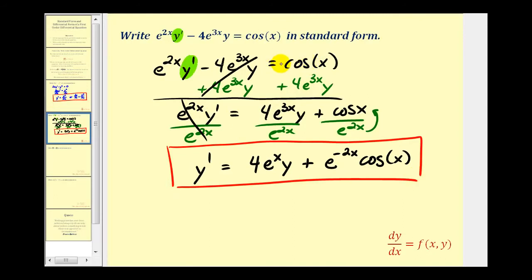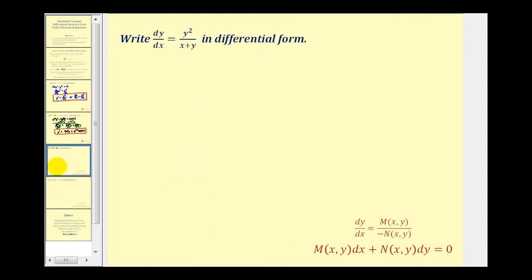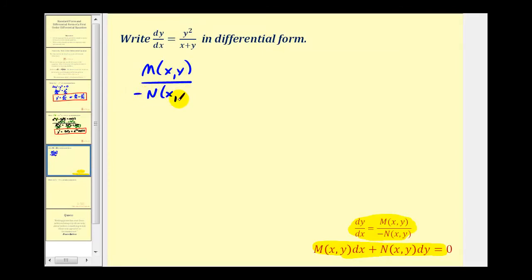Now let's write some first order differential equations in differential form. For our first example, the differential equation is given in standard form and we want to write it in differential form, with the reference formula shown below in red. To do this, we set dy/dx equal to M of x comma y divided by negative N of x comma y, which equals y squared divided by the quantity x plus y. One way is to let M of x comma y equal the entire quotient, and then let N of x comma y equal negative one.